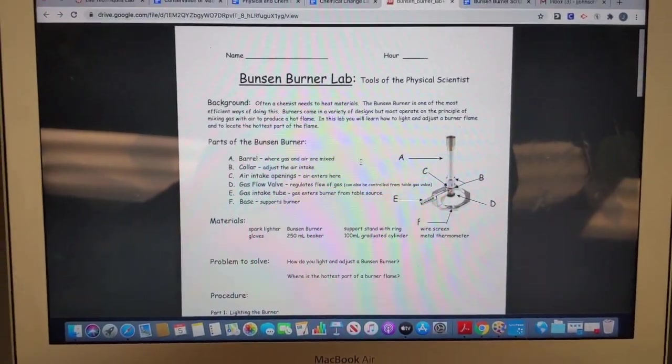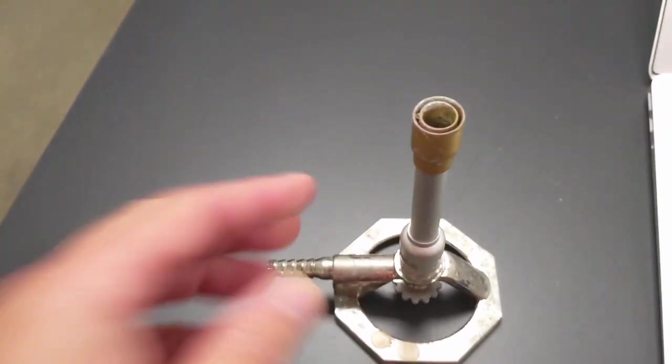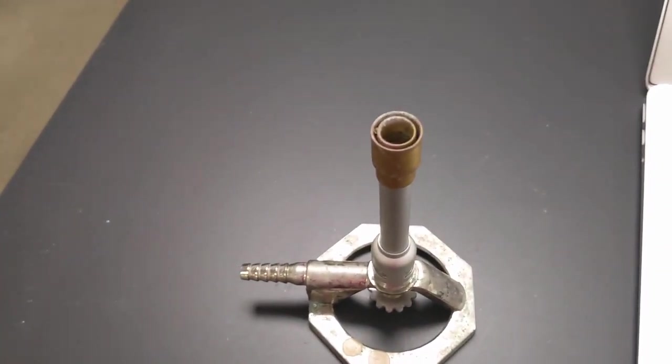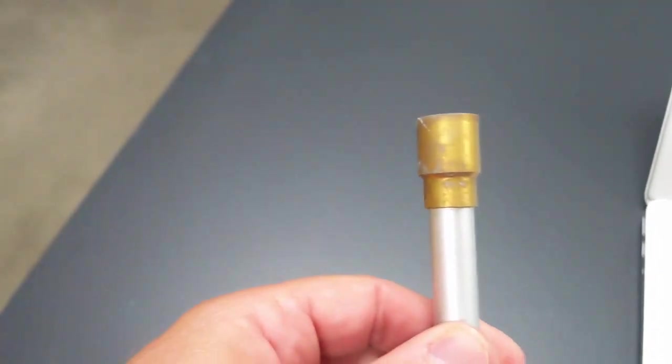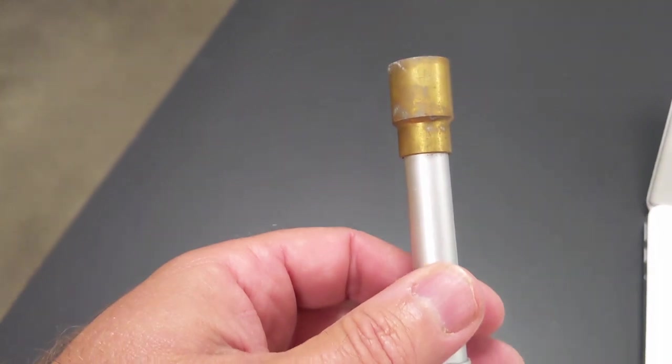Today we're going to look at the Bunsen burner lab. So here is a Bunsen burner and you've probably used this before. This right here is the barrel, and that's where the air and gas gets mixed.